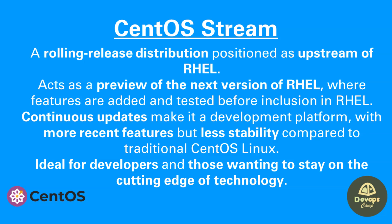Next, let's talk about CentOS Stream. It's a rolling release distribution which is upstream of Red Hat Enterprise Linux. CentOS Stream is a preview of the next version of Red Hat Enterprise Linux — it's the place where new features are developed, added, and tested before inclusion in Red Hat. Even though it has continuous updates, it's less stable compared to CentOS Linux, making it ideal for developers.